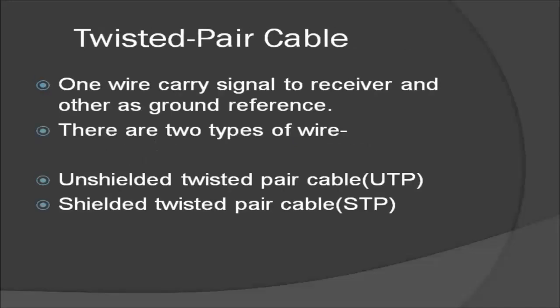A twisted pair consists of two conductors, each with its own plastic insulation twisted together. One of the wires is used to carry the signal to the receiver and the other is used only as a ground reference. So the receiver uses the difference between the two.